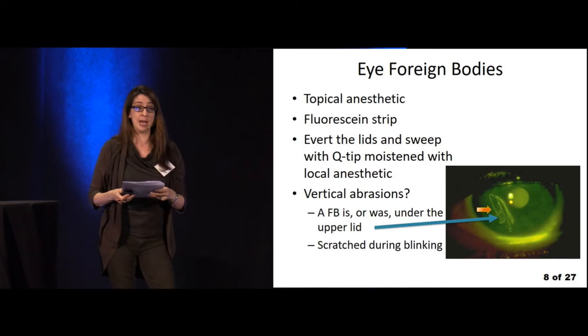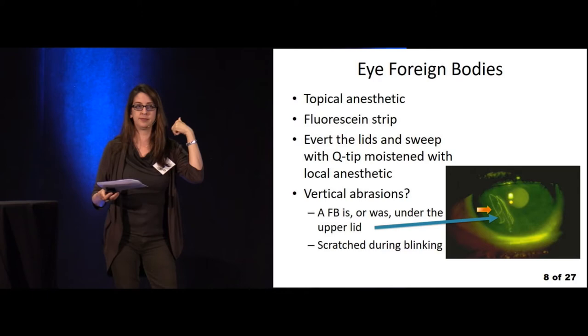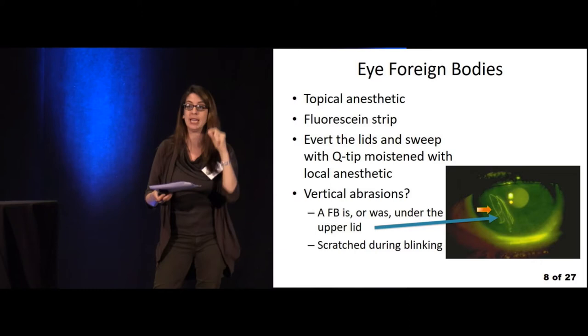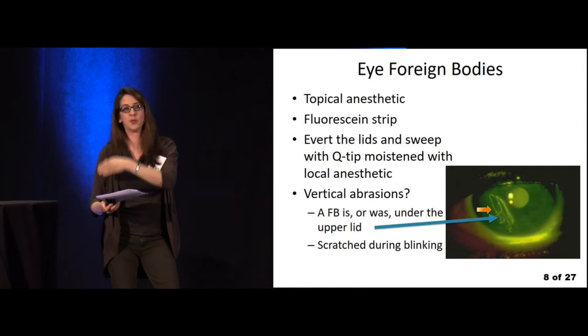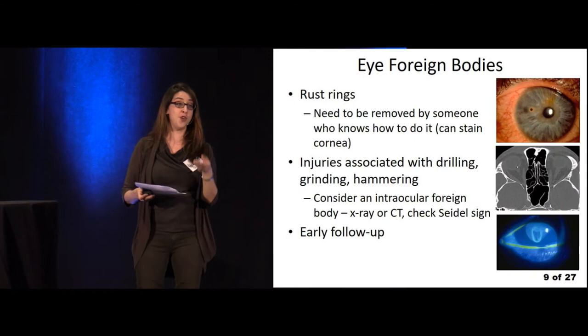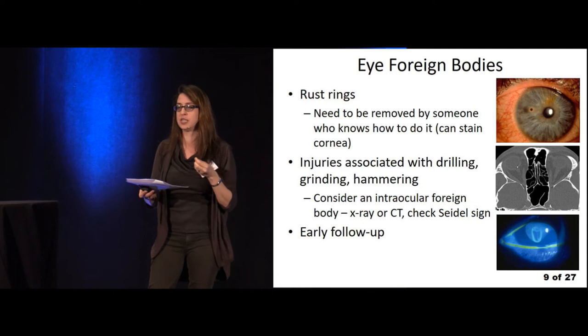If you see vertical abrasions, that suggests there could be a foreign body stuck on the lid — every time they blink it's scraping the cornea, like a windshield wiper blade that's fallen out scraping the windshield. If you have a metal foreign body, it can give you a rust ring; it's very important to remove that because it can stain the cornea, and this really should be done by an ophthalmologist.